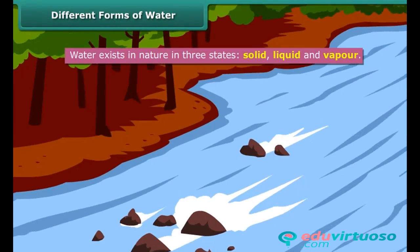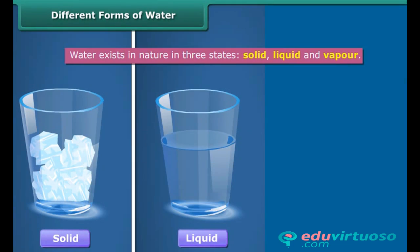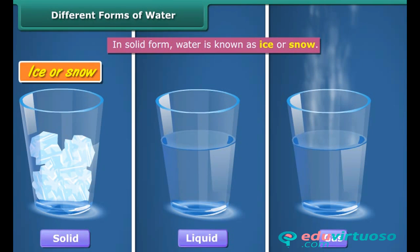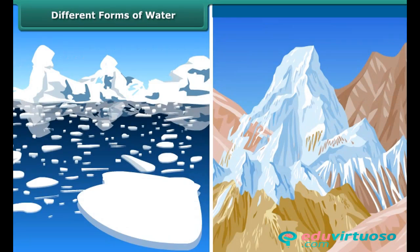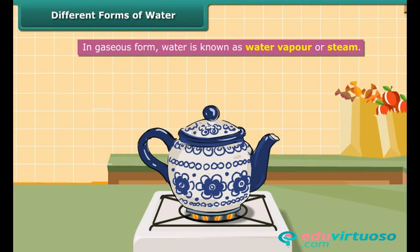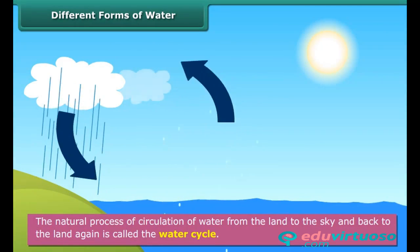Water exists in nature in three states: solid, liquid, and gas. In solid form, water is known as ice or snow, found at the poles as ice caps and in glaciers and mountains as snow. In gaseous form, water is known as water vapor or steam. But the most common form water takes is the liquid form, simply known as water.